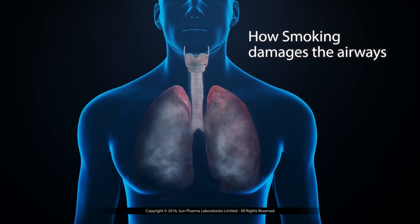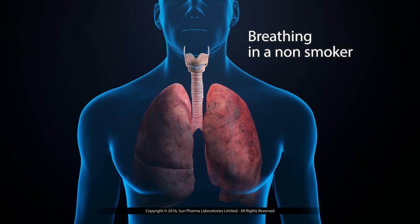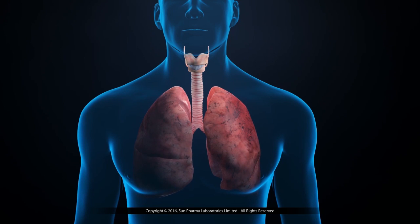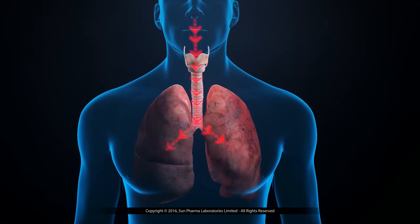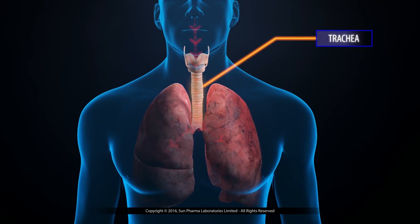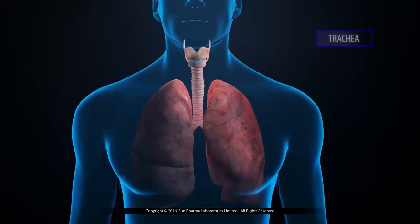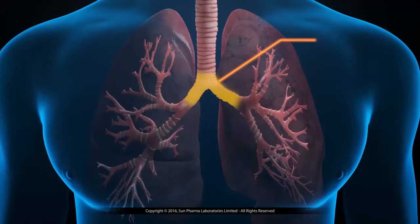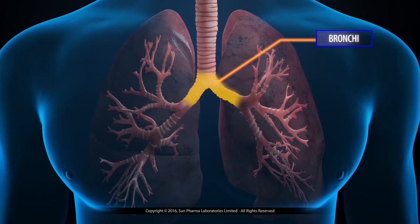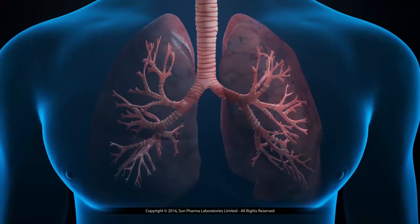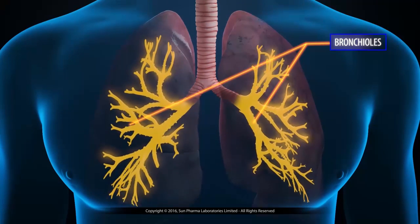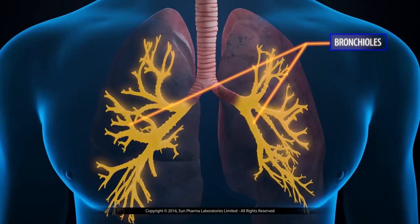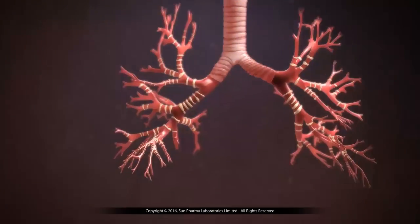How smoking damages the airways — let's consider breathing in a non-smoker first. With every breath, air travels through the windpipe called the trachea and enters the lungs via the breathing tubes called the bronchi, which further branch into smaller airways called the bronchioles.